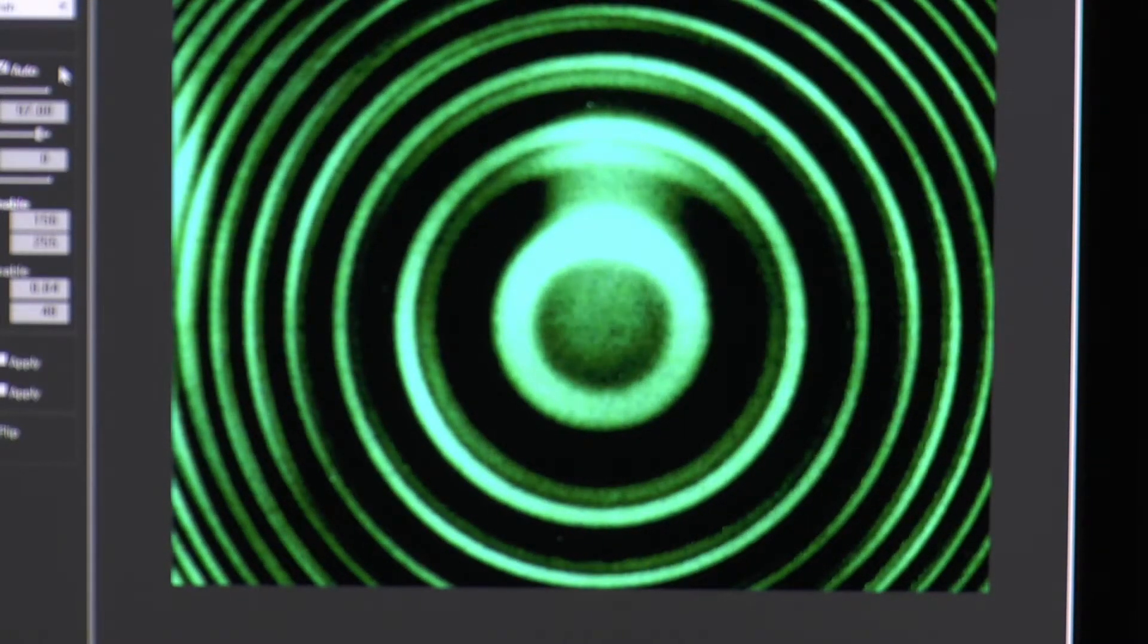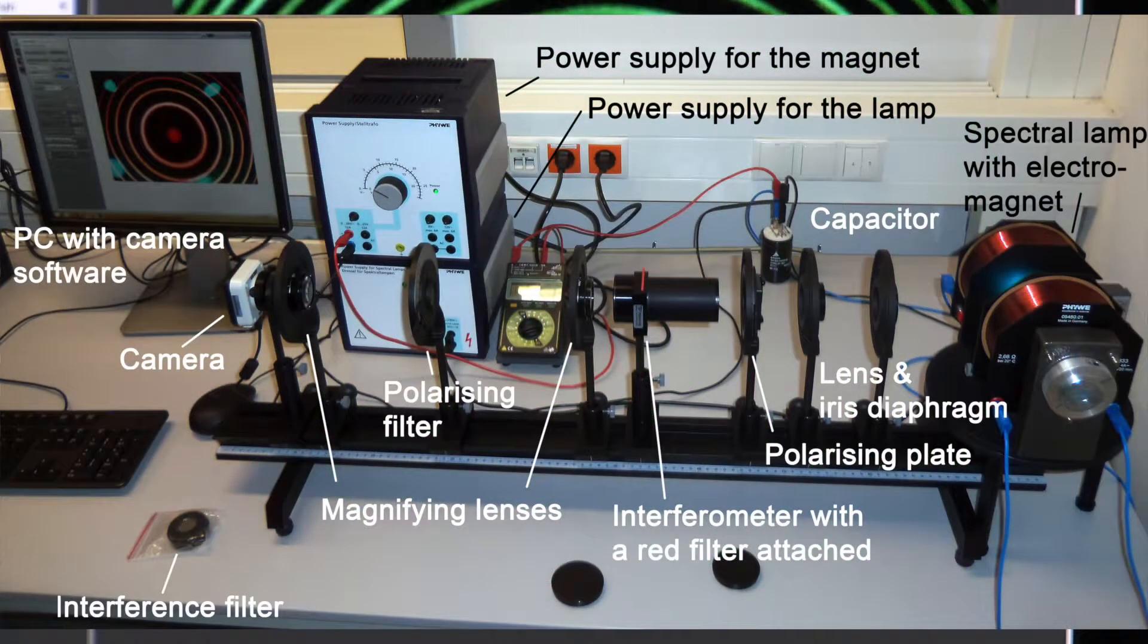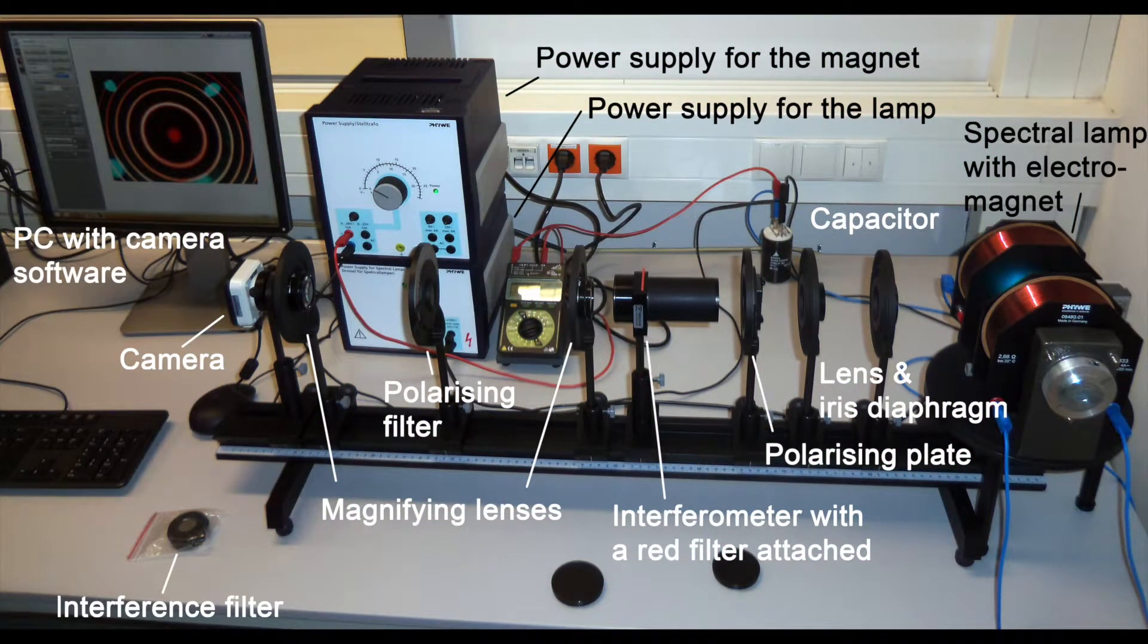The experimental setup comprises cadmium lamp, electromagnet on a rotating table, Fabry-Perot interferometer, and CCD camera.